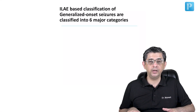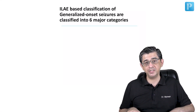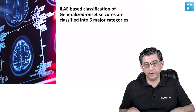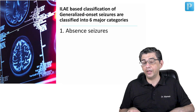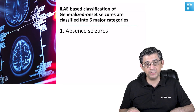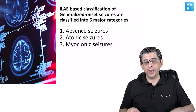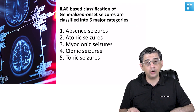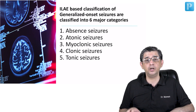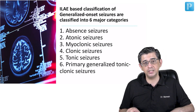I shall be describing the International League Against Epilepsy classification of generalized onset seizures, which comprises a total of six varieties. The first one is rather more common in the pediatric age group — absent seizures. Then we have atonic and myoclonic seizures. Numbers four, five, and six are the ones you are more comfortable with: clonic seizures, tonic seizures, and the commonest combination — generalized tonic-clonic seizures.